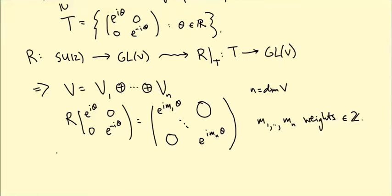In particular, if you act with a non-diagonal matrix in SU2, it's going to mix up these different summands. And that will be a crucial part of our analysis later on.